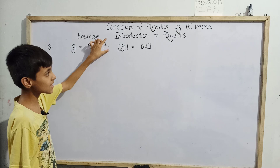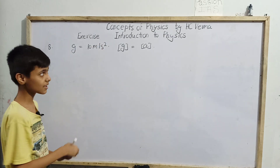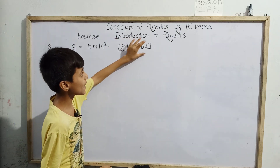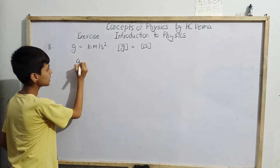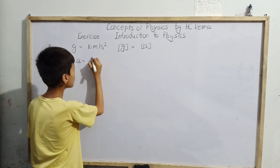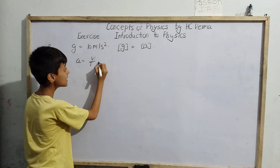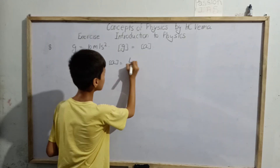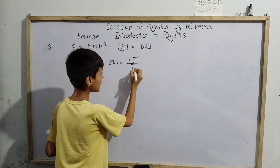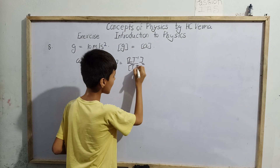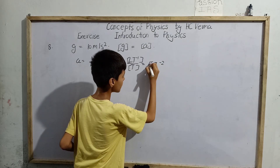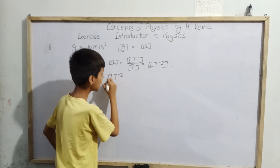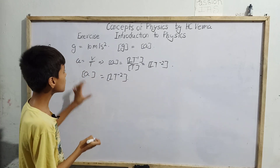So now we have to convert 10 meters per second square into centimeter per minute square. For that, first we need to find the dimensions of G, which are the same as the dimensions of A. We find A directly. A has the formula V divided by T, so the dimensions of A equal the dimensions of V — which is LT⁻¹ — divided by T, which gives LT⁻². So the dimensional formula for A is LT⁻².